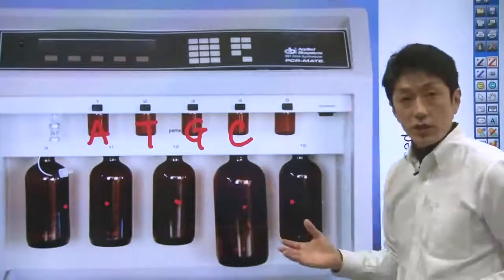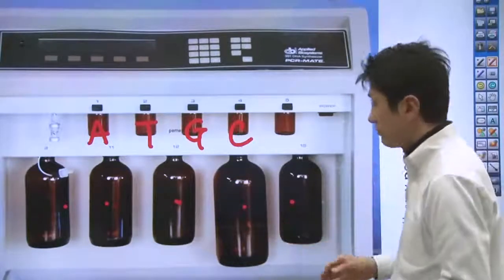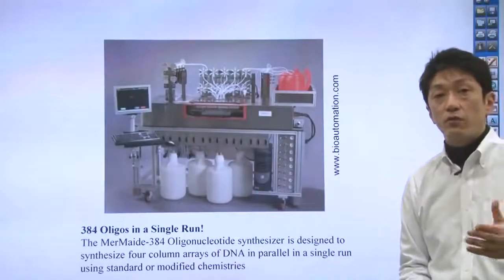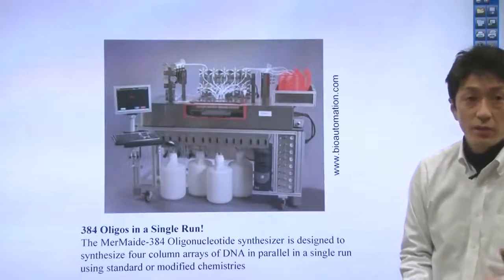So, then, this machine, old machine, can make DNA one by one. But, nowadays, you can make it. You can make 384 DNA oligonucleotides simultaneously.